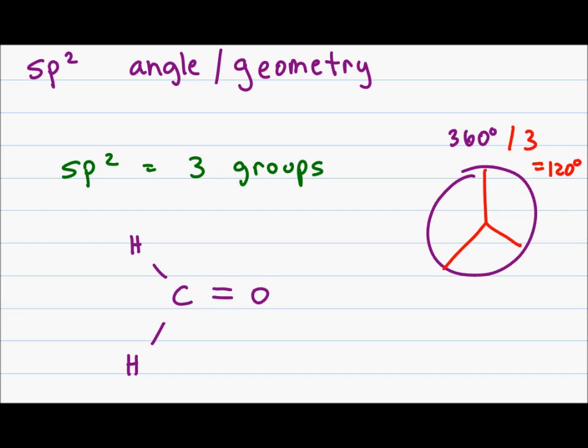The reason this isn't exactly 120 is notice that the carbon to oxygen bond is a lot more electron rich than the carbon to hydrogen bonds, and these will actually push the hydrogens a little bit farther away, giving me an angle that is slightly less than 120 degrees between the two hydrogens, that is slightly greater than 120 degrees for the hydrogen to oxygen.